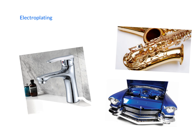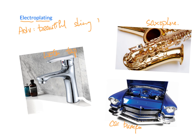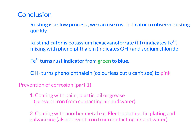The last method of coating iron with metal is electroplating. Electroplating means coating a metal onto the surface of an iron object. Examples include water taps, saxophones, and car bumpers — all of which look very shiny. The advantage is a beautiful, shiny appearance. The disadvantage is that coating with another metal is quite expensive. The mechanism is the same as previous methods: it prevents the iron inside from contacting oxygen and water.